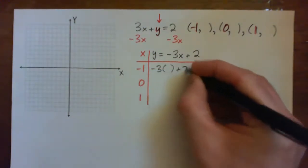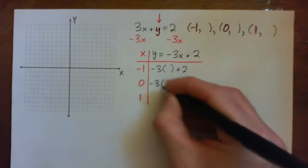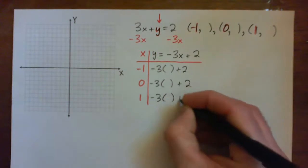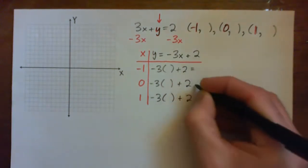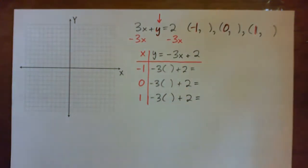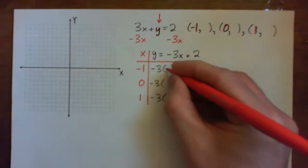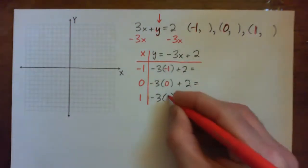And so when I plug in x as negative 1, I'm going to use parentheses, and I'd like you guys to do that also. Use parentheses to plug in the x values, and then calculate. So we're going to plug in negative 1, 0, and 1.